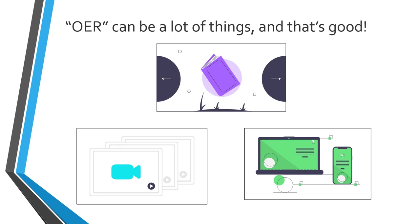OER can be a lot of things, and that's good. OER come in many types and many forms, which means instructors are not limited — they can innovate. One misconception I've encountered is that faculty think open textbooks are the only kind of OER. Fortunately, that's not true. OER includes open textbooks, but also whole self-contained courses, images, ancillary materials like test banks and study guides, course modules, software, all kinds of media, and so much more.